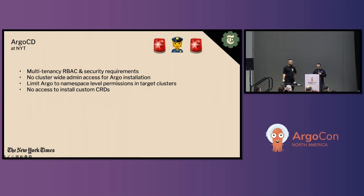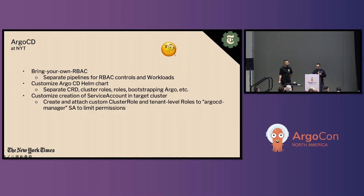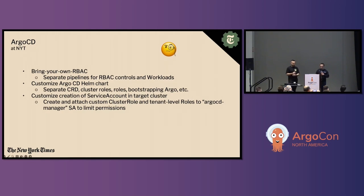Basically, no cluster-wide access means we can't use native tools to install Argo itself. We had to limit Argo to certain namespace permissions, which means we can't use the Argo CD CLI to add new clusters. We had to create our role bindings and roles separately, and we couldn't just out-of-the-box install CRDs — we had to create a separate process for those since we had limited administrative access. Our solution was a bring-your-own RBAC model. We decided to separate the pipelines that deploy RBAC resource controls from Argo workloads, allowing us to install CRDs and required roles with admin permissions separately, integrating with the bootstrapping of Kubernetes clusters to manage cluster resources for Argo.